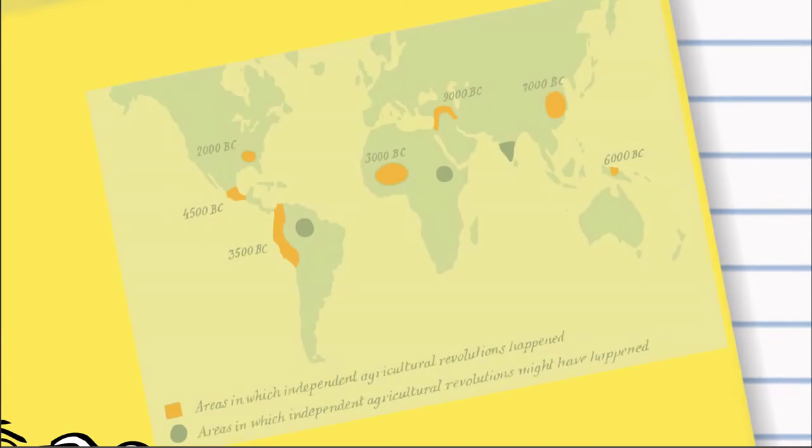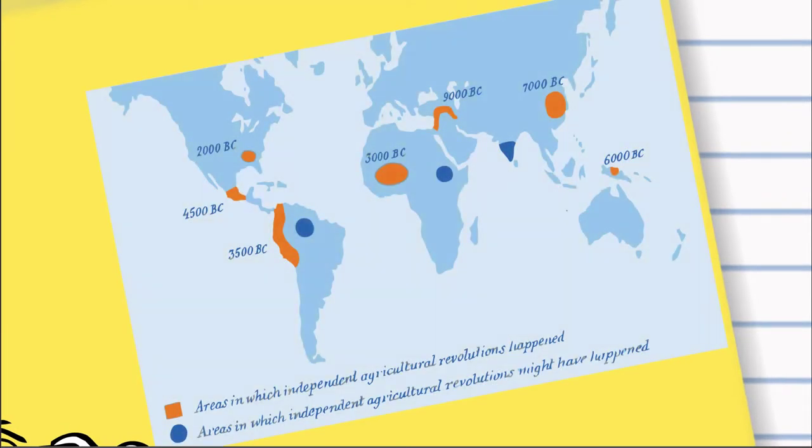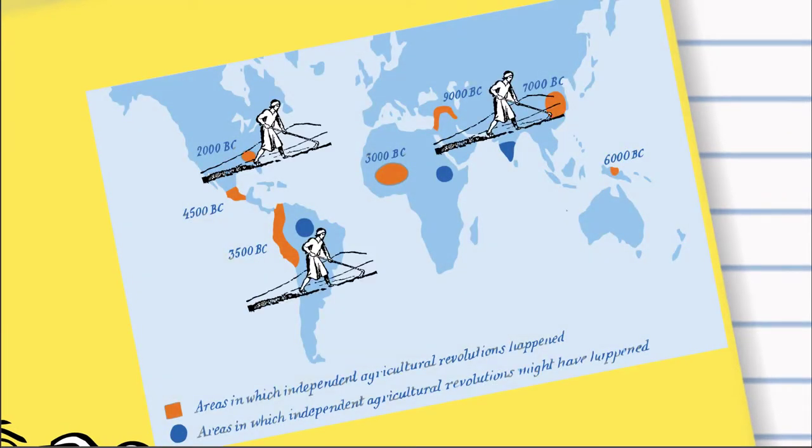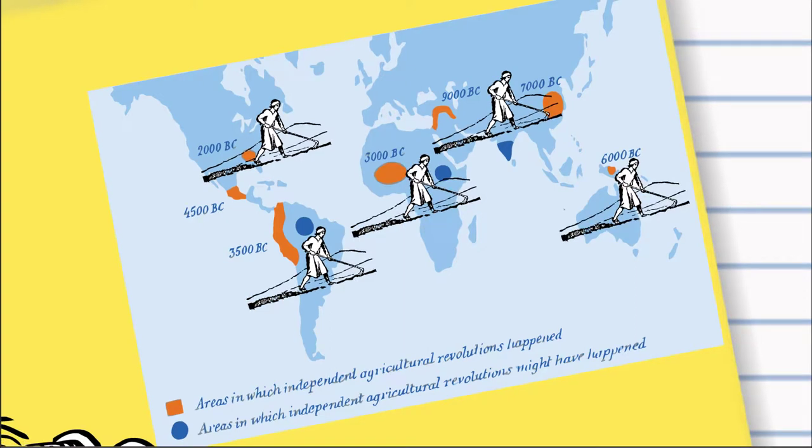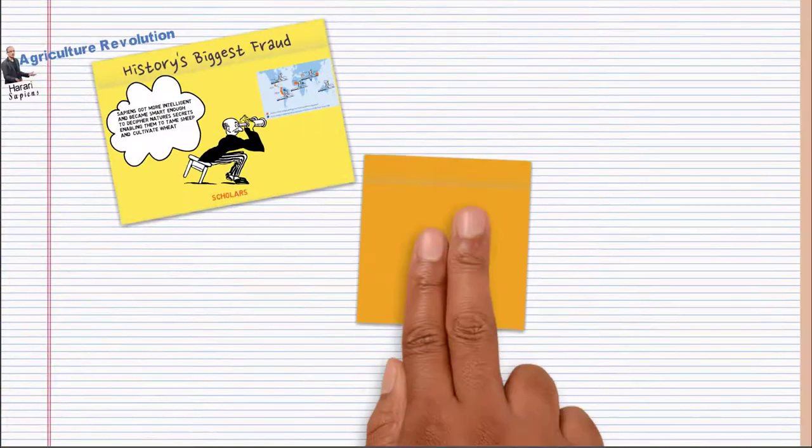And the reason that they said this is that when you look at the fact that the Agricultural Revolution developed independently in many different spots at many different times, it's reasonable to believe that it was a positive.